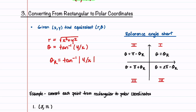We'll now walk through two examples of converting a point from rectangular to polar coordinates. The formula to find r is r = √(x² + y²). If our point is in the first quadrant, theta = arctan(y/x). If our point is in the second, third, or fourth quadrant, we use a reference angle theta_r = arctan(|y/x|). From the reference angle: in quadrant 2, theta = π − theta_r; in quadrant 3, theta = π + theta_r; and in quadrant 4, theta = 2π − theta_r.